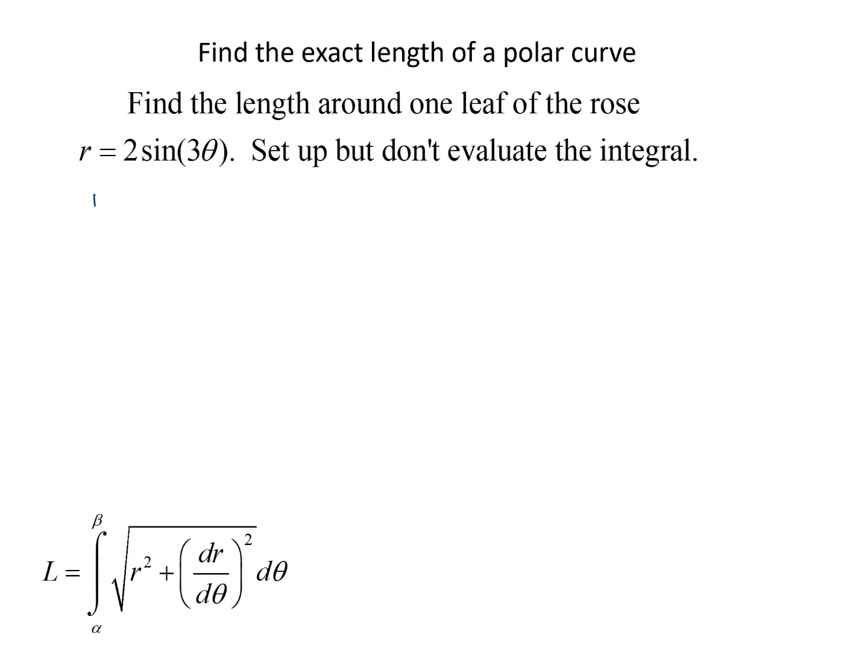We're going to need to know where one leaf of the rose is, so first we're going to graph this in rectangular coordinates. Our period is normally 2π, but we've got this 3 in front, so it's going to be 2π/3.